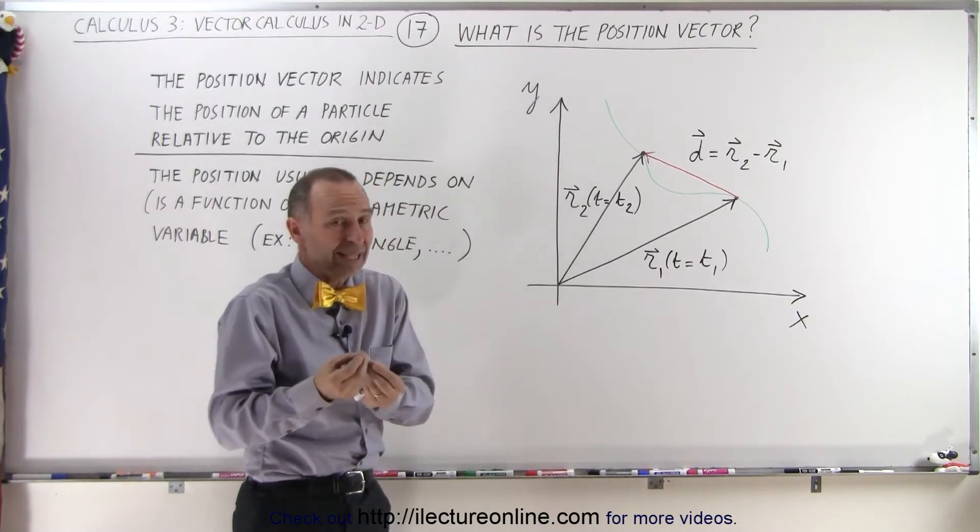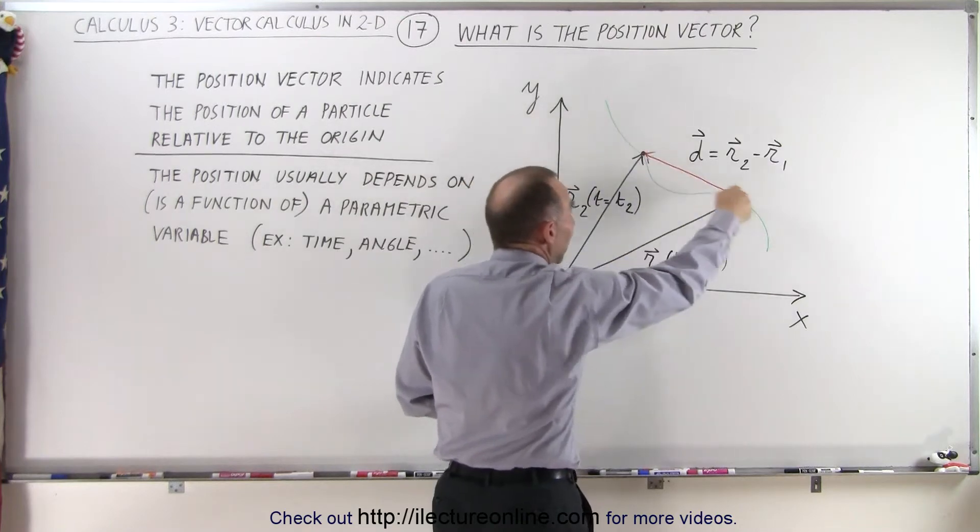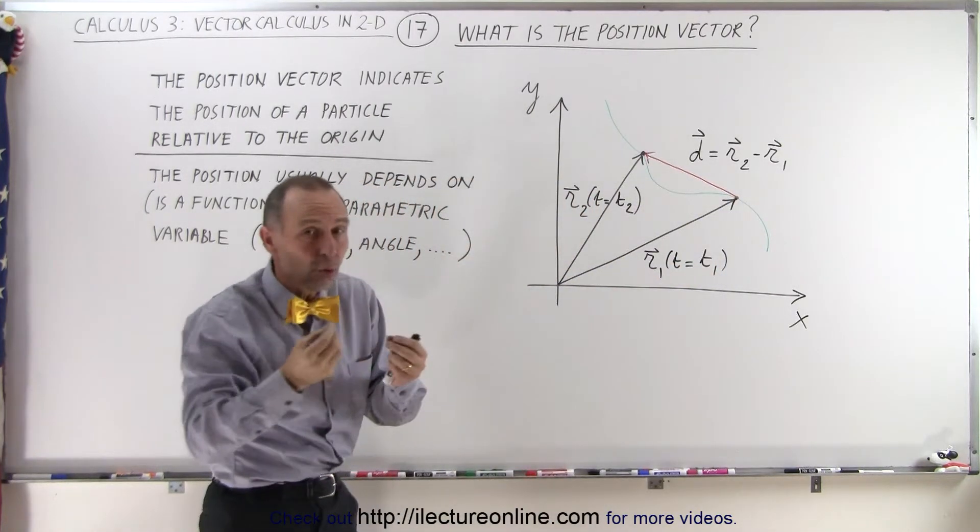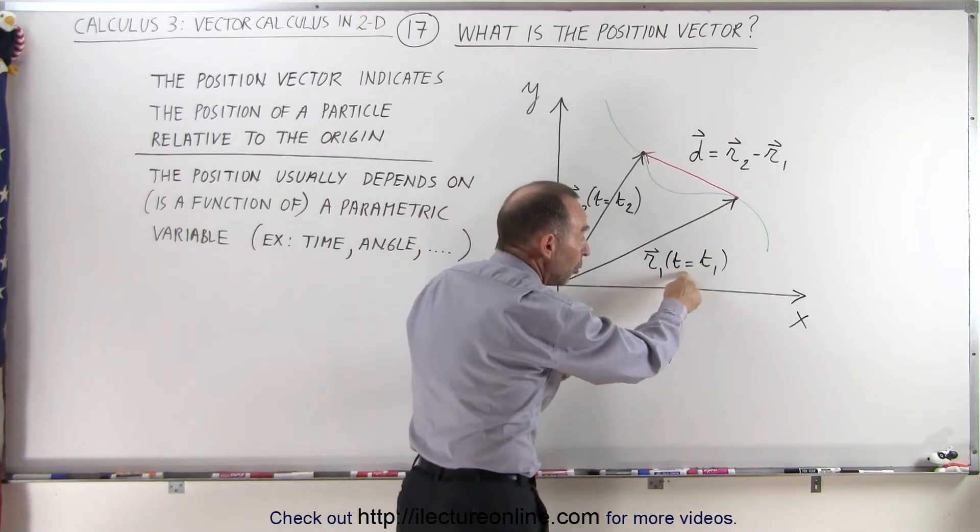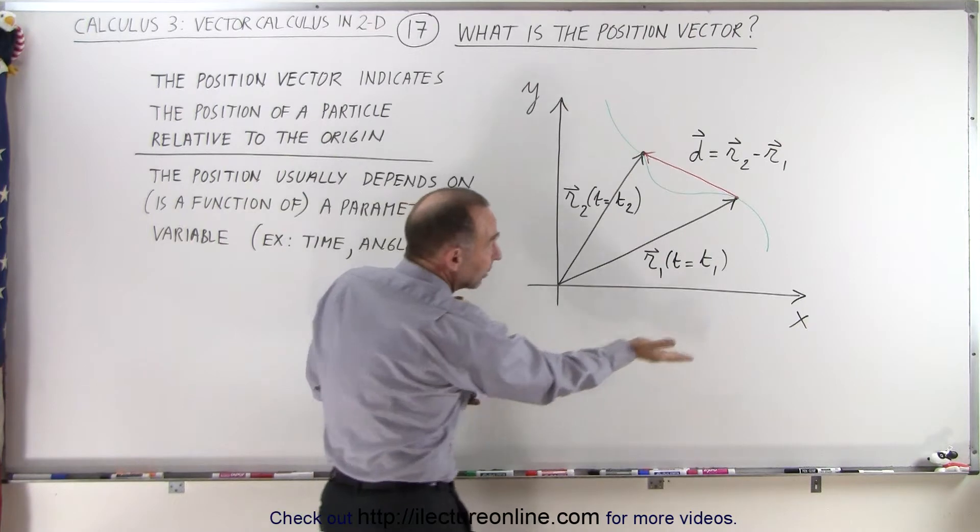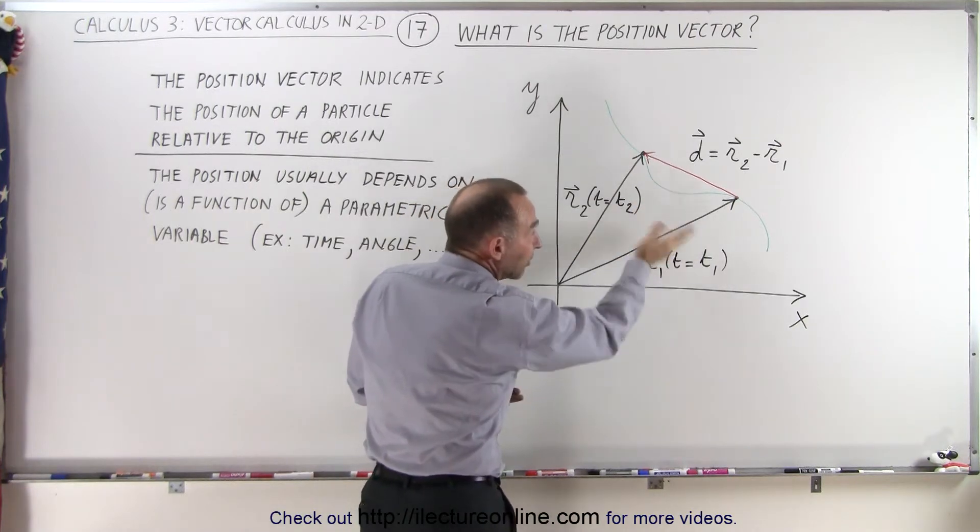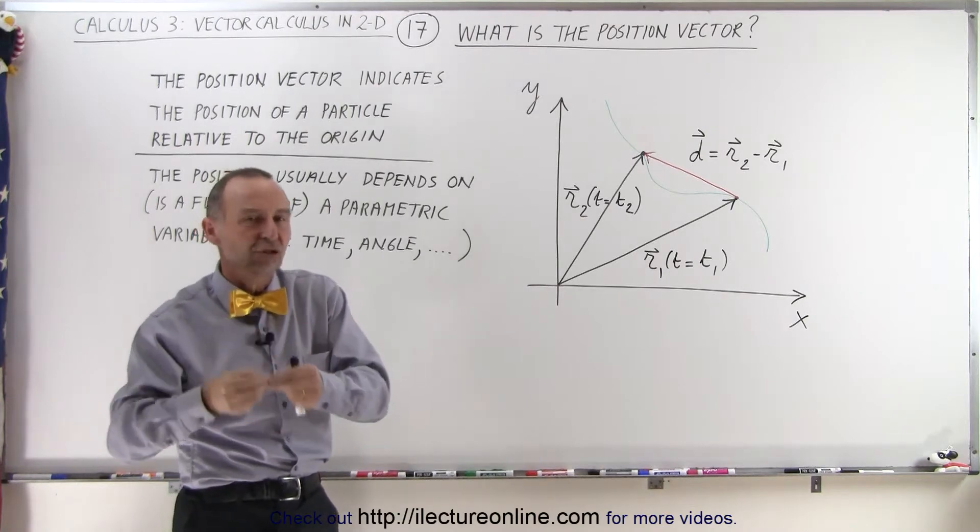It's used, for example, to keep track of a particle that may be moving along a path like that green line that I have here. And if you want to know where that particle is at, at a particular moment in time, so t could represent time or t could represent an angle relative to the x-axis, you want to know where that particle is, you use a position vector.